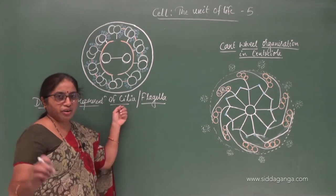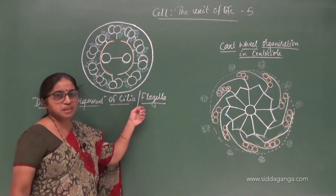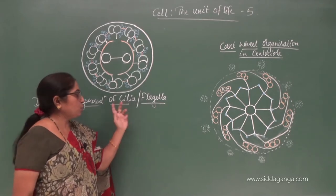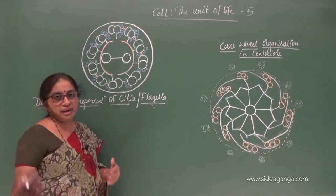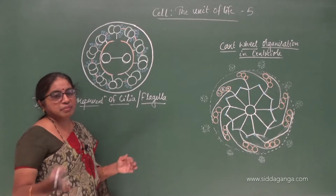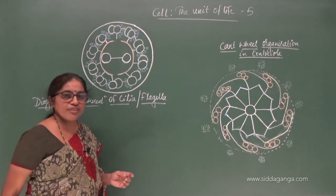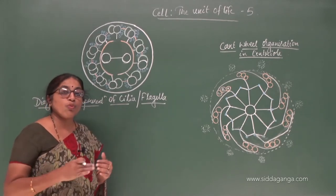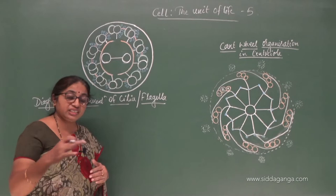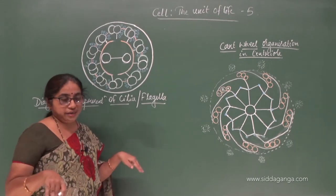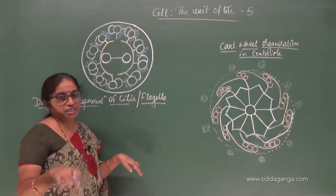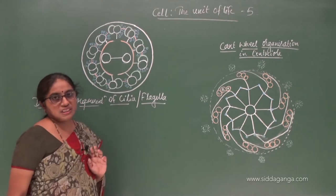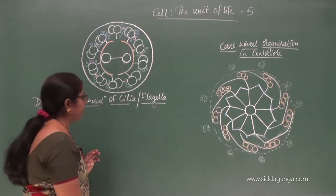Cilia are numerous in number whereas flagella there may be one or two in a cell. Flagellum helps in the movement of the cell, whereas cilia may help in the movement of either the cell or the fluid in which the cell is present. Cilia are the hair-like structures.